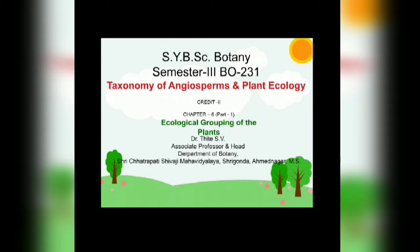Today we are going to start the next topic in this chapter — halophytes, that is plants of salinity habitats. Halophytes are the salt-loving plants that occur naturally only on salty soil or water. They grow in salt marshes or estuaries. In such places the soil is said to be physiologically dry because the water present in the soil is not available to the plants.